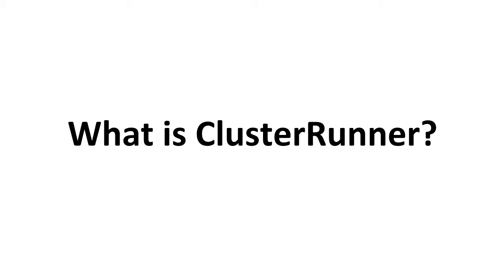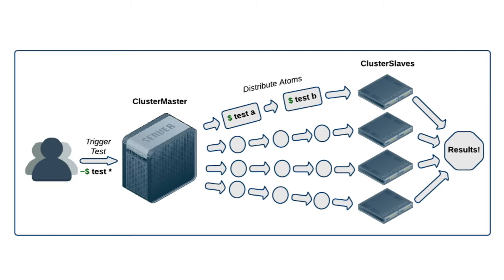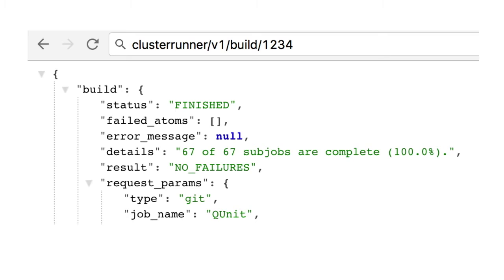Cluster Runner is a distributed service that we built to achieve a single goal: to execute tests in the fastest way possible. It achieves this by horizontally distributing workload across whatever computing resources you allocate to Cluster Runner, and it efficiently utilizes these resources by using historical timing data from previous builds to best distribute the workload. You interact with Cluster Runner through a RESTful API, which lets you integrate it with any automation or CI system you might already have. We've dedicated the second half of our talk to showcasing Cluster Runner in action.